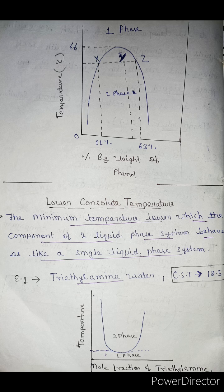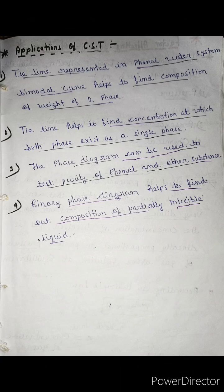The applications of CST: the tie line represents the phenol-water system on a model curve and helps to find the composition and weight of the two phases. The tie line also helps to find the concentration at which both phases exist as a single phase. The phase diagram can be used to test the purity of phenol or another substance, and to find the composition of partially miscible liquids.